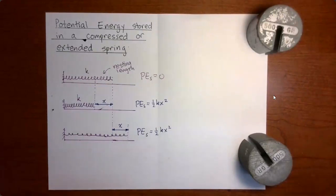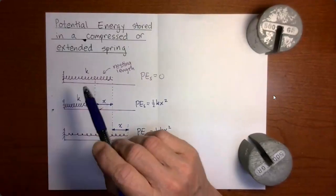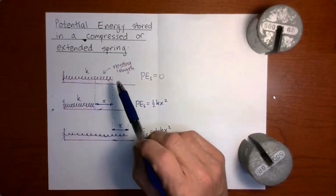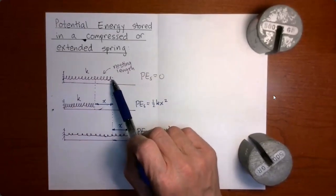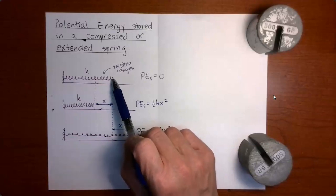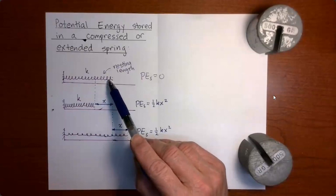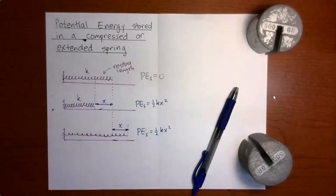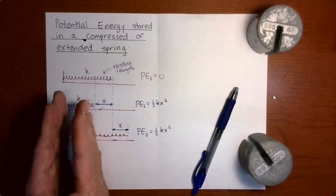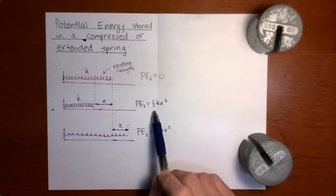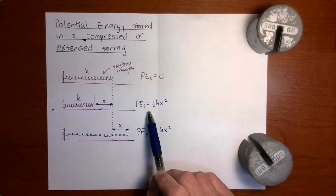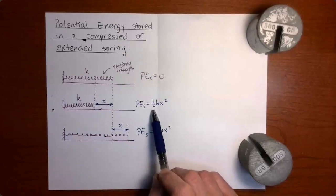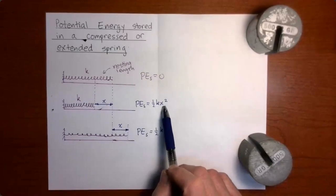Here are the formulas we use to calculate the potential energy stored in a compressed or extended spring. Let's say we have a spring with spring constant k, and the spring is at its resting length — not compressed and not extended. If the spring is at its resting length, the potential energy stored in the spring is equal to zero. On the other hand, if we compress the spring through a distance x, the potential energy stored in the spring is one half the spring constant multiplied by the square of the compression of the spring.